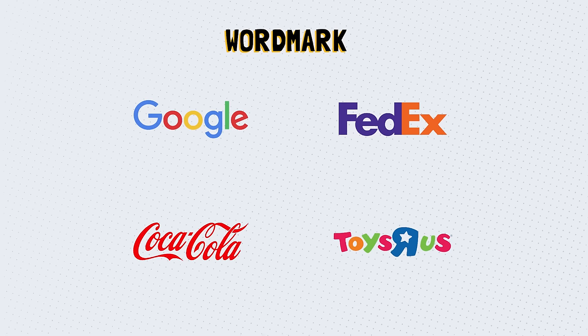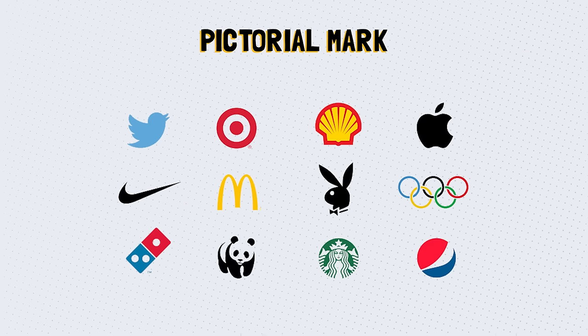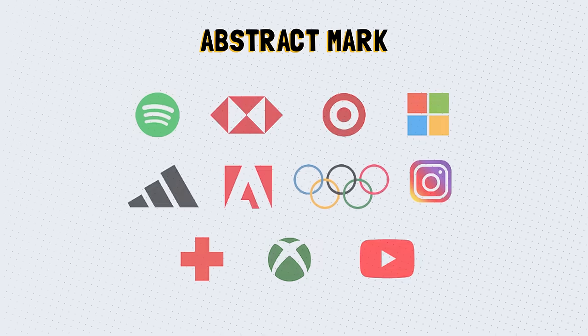A wordmark focuses on the business name alone rather than reducing it to a single lettermark. A pictorial mark, also known as a brandmark, refers to a graphic-based logo — usually an icon that has been simplified and stylized to represent a brand. An abstract mark is the opposite of a pictorial mark. It is not based on a real object; instead, it is an abstract geometric representation that represents a business.